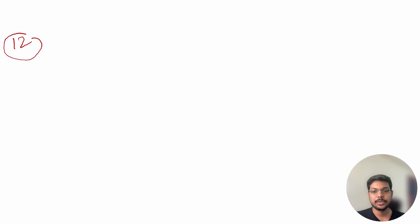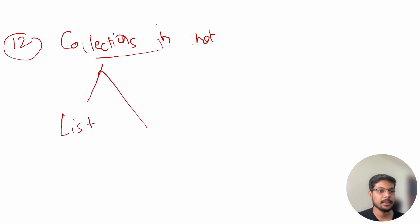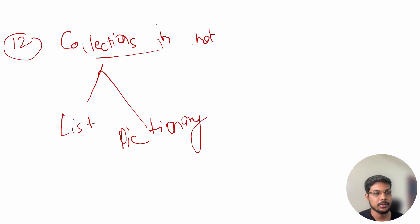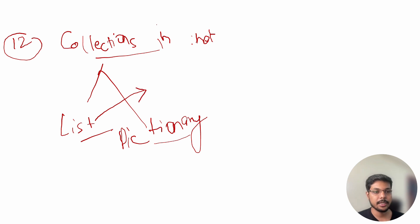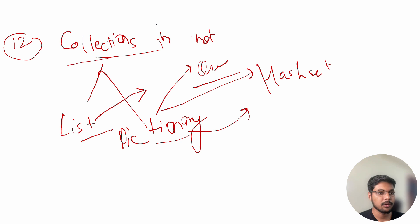Question number twelve is: what collections are available in .NET? First explain what collections are, then name the types available — such as List, Dictionary, HashSet, Queue, and so on. Also discuss when to use each one: in which case would you use a List, a Dictionary, a HashSet, or a Queue? This is a broad topic, so spend some time going through the collections in .NET.